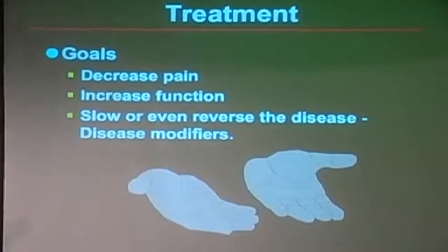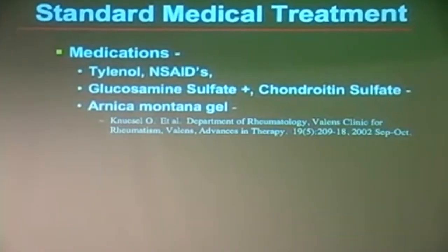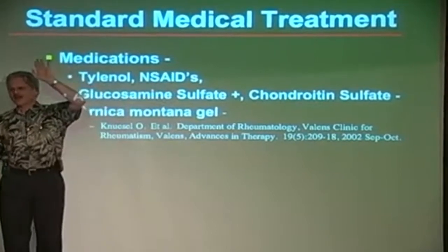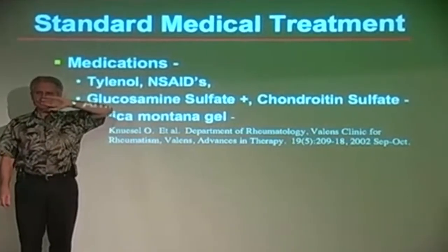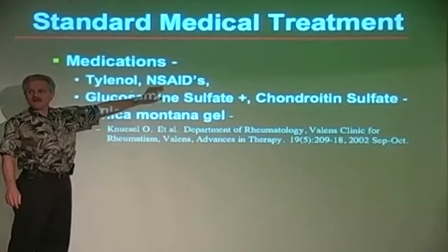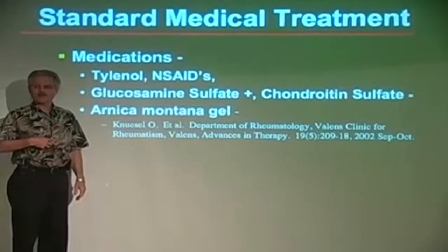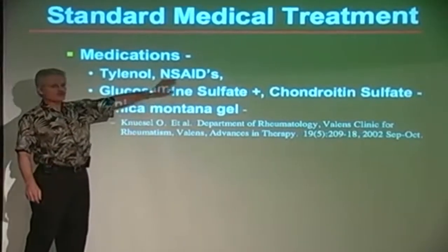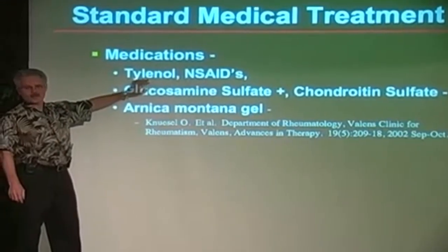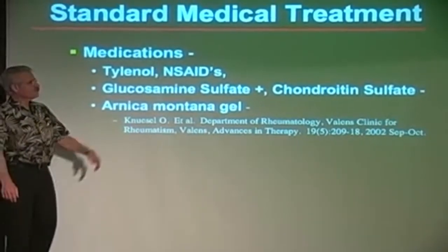Standard medical treatment starts with NSAIDs — non-steroidal anti-inflammatory drugs like ibuprofen, Indocin, Meclamen, and many others. These do not make the joint any better; they don't decrease the inflammation in the joint, and they often cause upset stomach or bleeding. While we use them, we have to be very careful. If you're going to use a medication for pain, Tylenol is a better choice — the anti-inflammatory component doesn't do very much for joint inflammation; it's just handling the pain, and Tylenol does better with that.